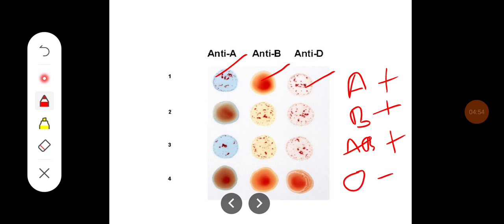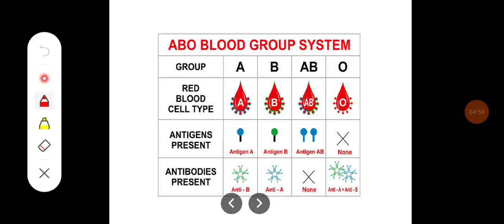This is how blood group is determined based on agglutination. To recap: in blood group A you have antigen A and antibody against B; in blood group B you have antigen B and antibody against A; in AB blood group you have both antigens but no antibodies; and in O blood group you have no antigens but both antibodies.